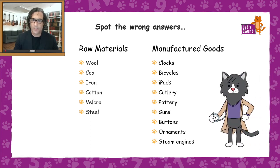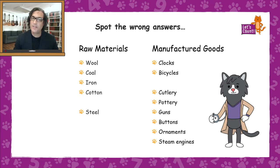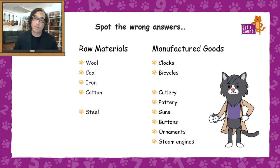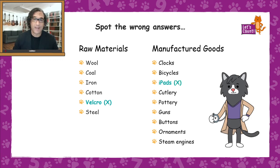Which are the wrong answers? All of the other things were manufactured goods and raw materials that were part of people's lives in the empire — velcro and iPads were not.